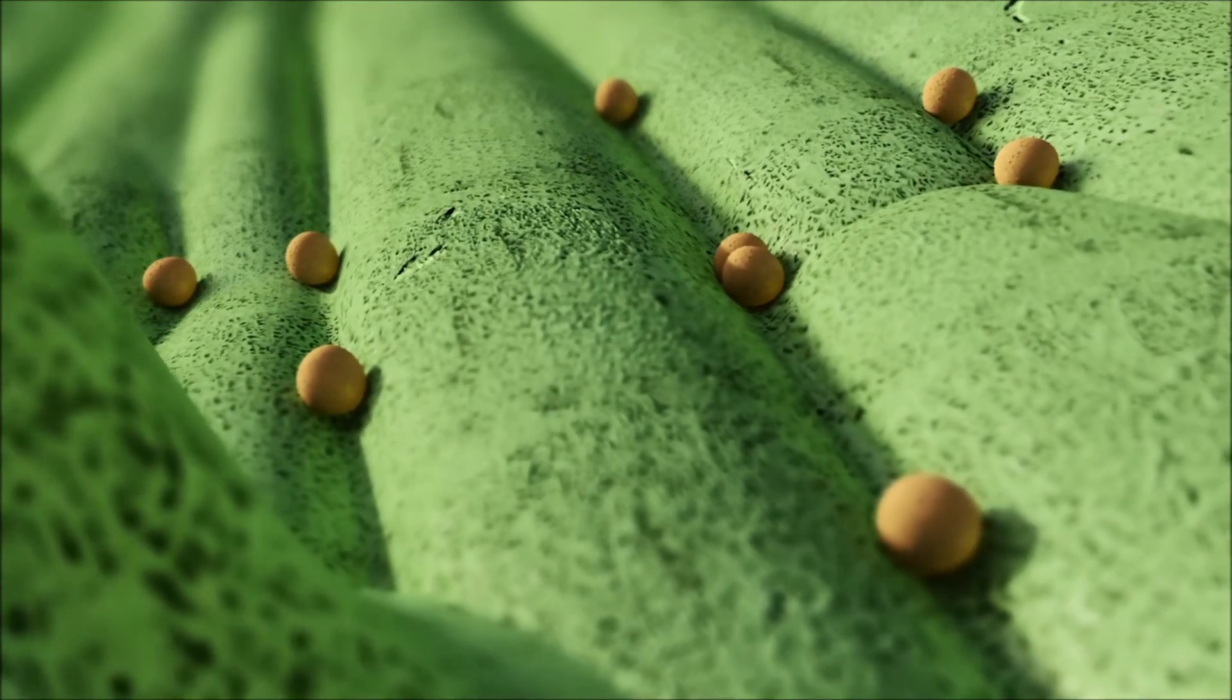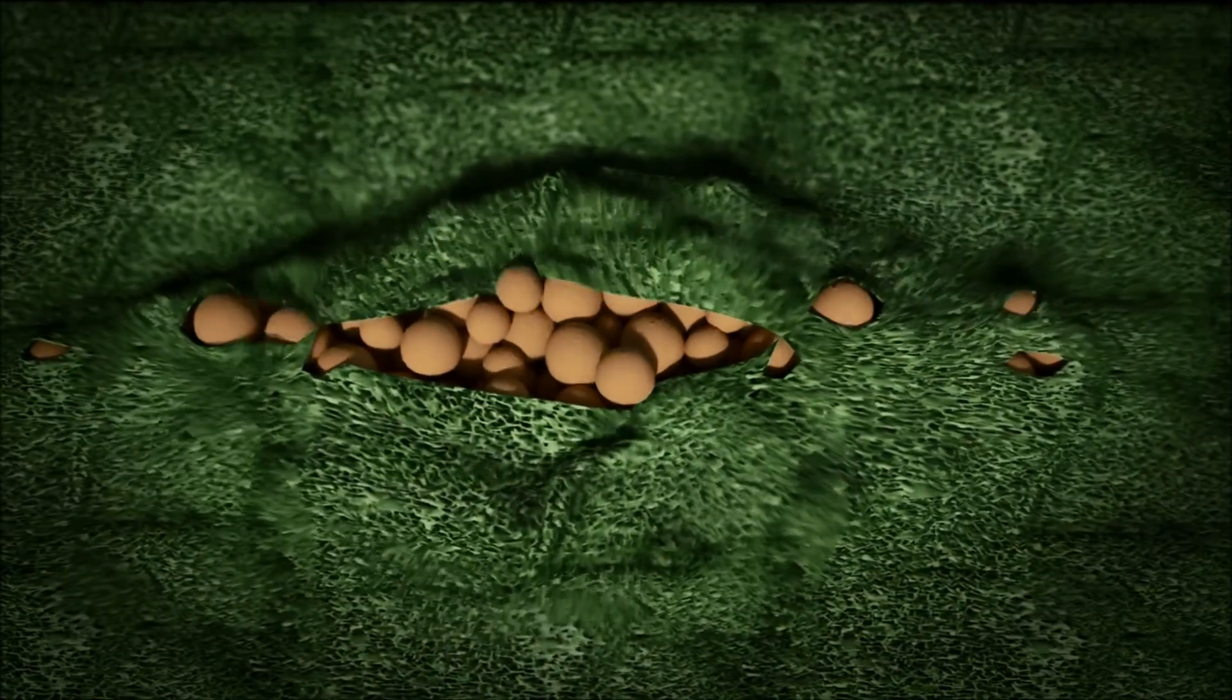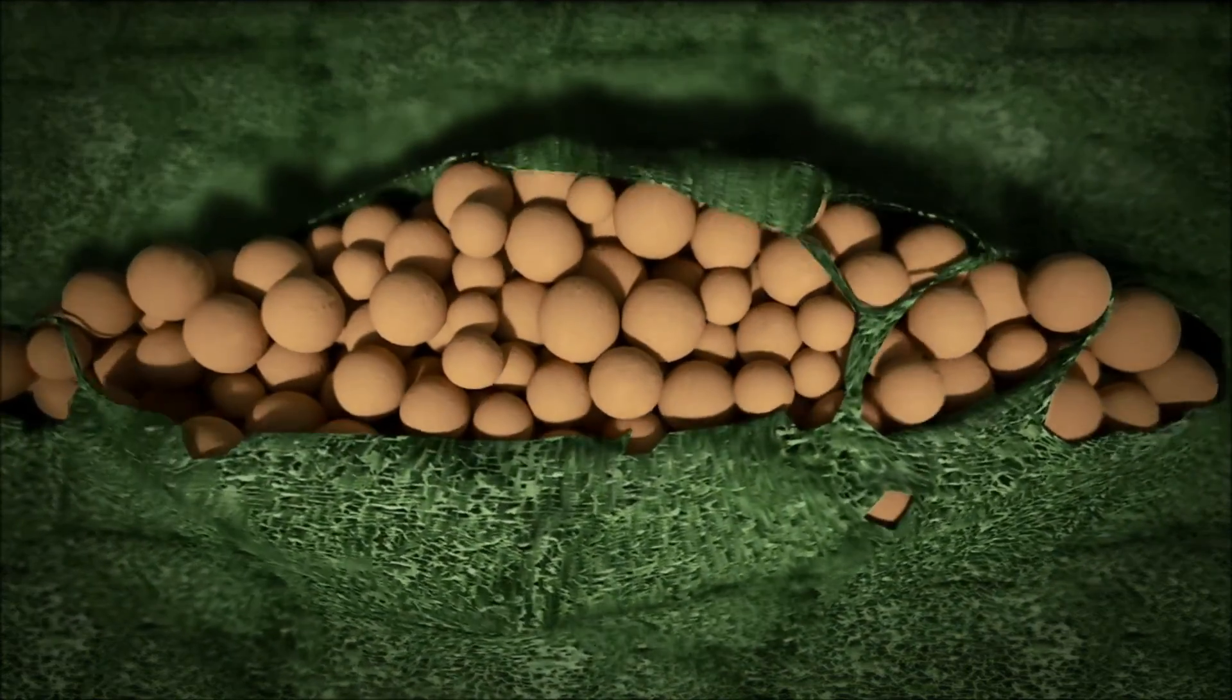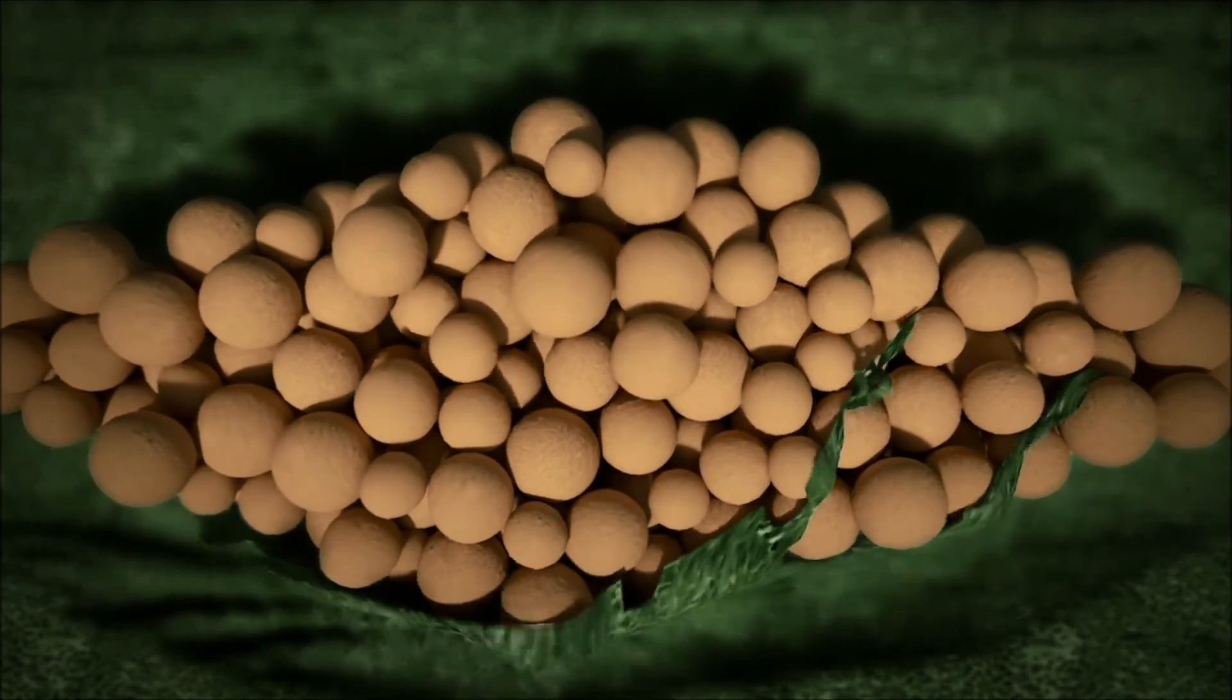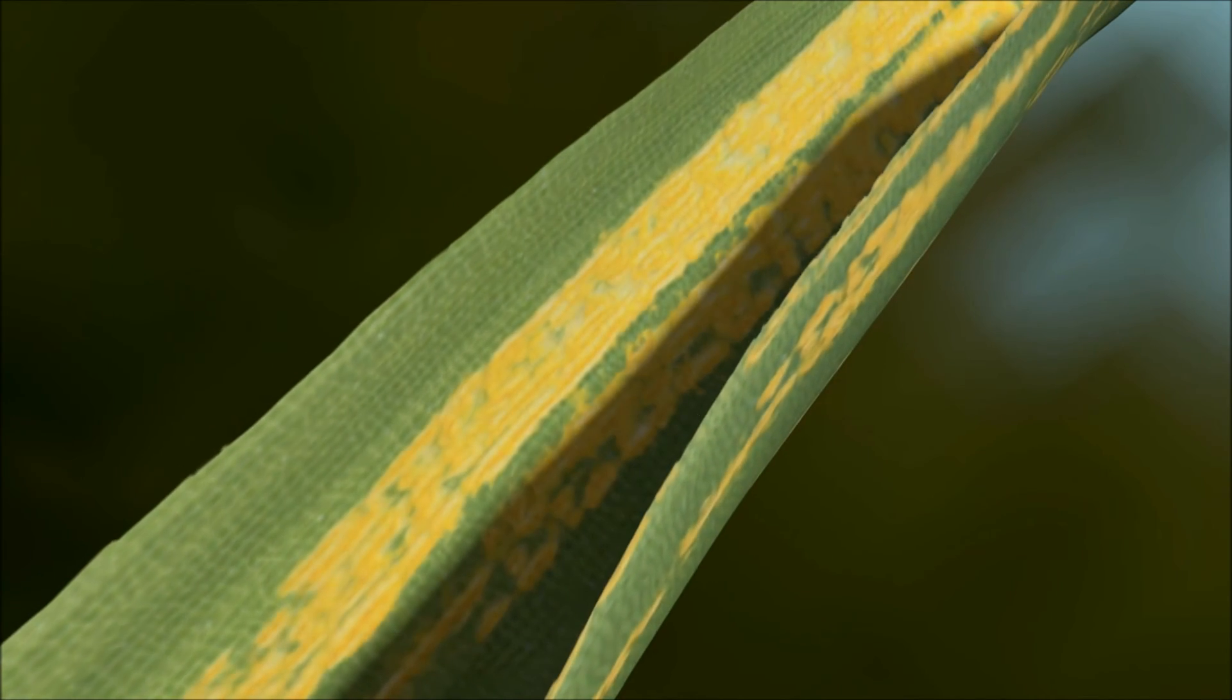With rust infections, the disease cycle is much shorter, with more superficial damage to the leaf, causing increased water loss. This can also lead to leaves rolling up, further reducing the area available for capturing sunlight.